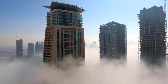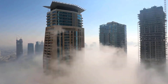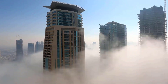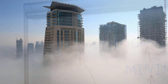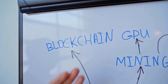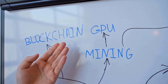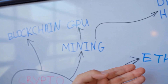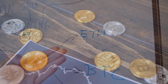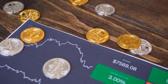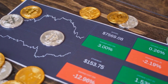Algorand value equivalent to 4.1649 rands a coin. The present cost range: 4.0853 to 4.1932. The earlier day close: 4.1818. The change was 0.0169, or 0.40%. Reverse rate: ZAR to ALGO.